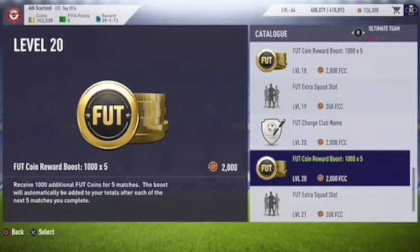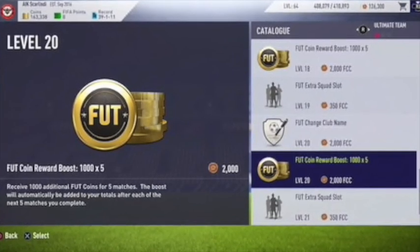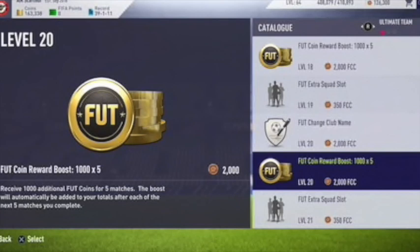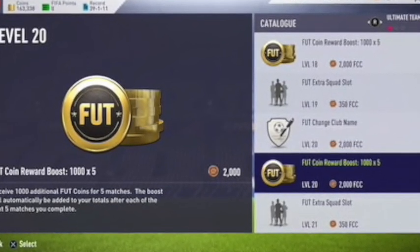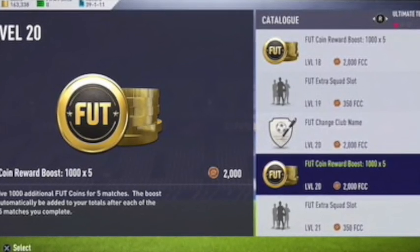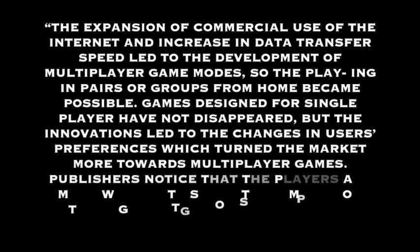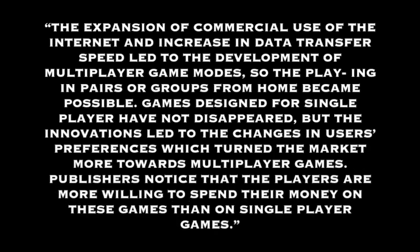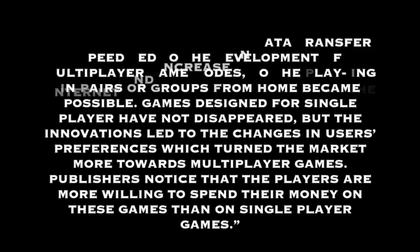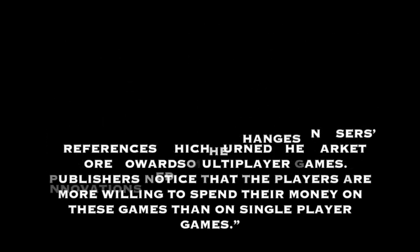There is free choice in the game modes, but why do so many customers still filter themselves to the pay to win game mode known as FIFA Ultimate Team? First, we must look at the structure of the game itself. EA decided to make their pay to win game mode a multiplayer game mode, which is the most popular type today. According to Nanan Tomic, the expansion of commercial internet use and increased data transfer speeds led to the development of multiplayer game modes, changing user preferences toward multiplayer games. Publishers have noticed that players are more willing to spend money on these types of games, and therefore EA chose a game mode that would appeal to the largest group of people.